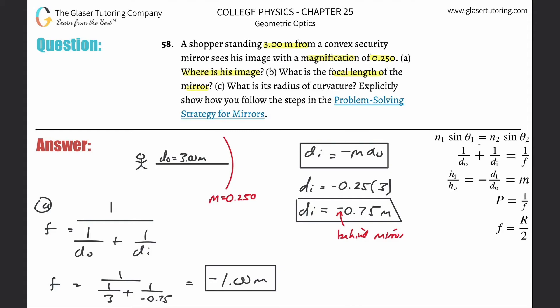Cool, so that takes care of letter b. Letter c: What is the radius of curvature? Well, guess what? We got a nice little equation over there on the right-hand side. So for letter... why did I label this a? This was b. I don't know what I'm doing. This is a and now c. We got a formula, right? Focal length is equal to the radius of curvature all divided by 2.